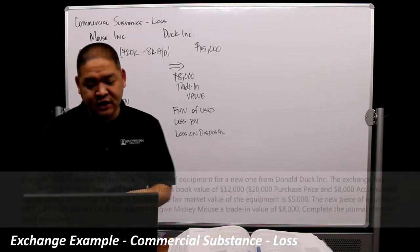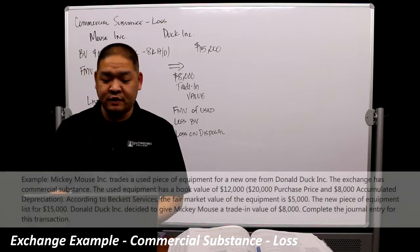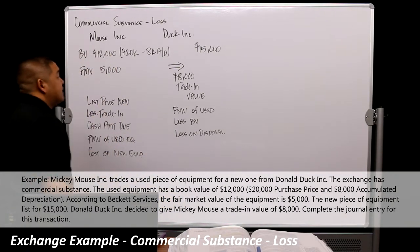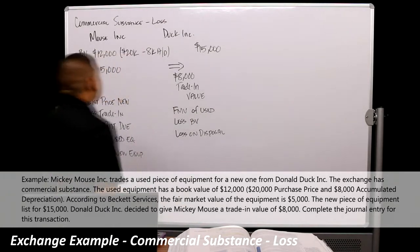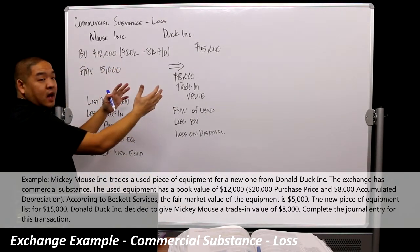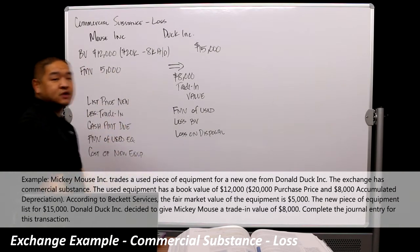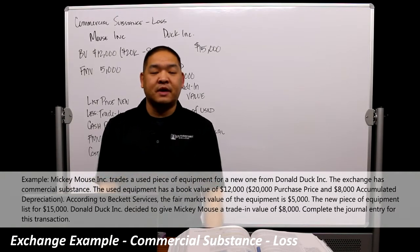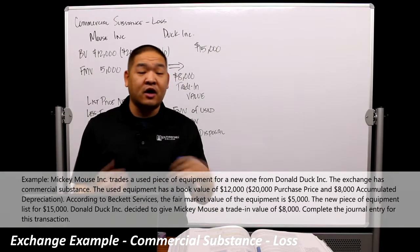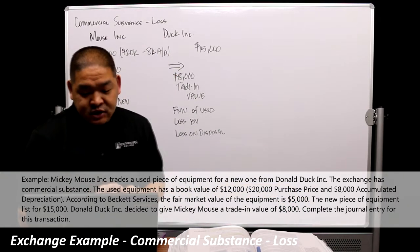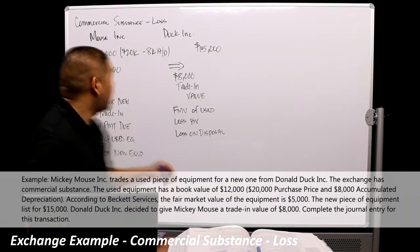Mickey Mouse Inc. trades a used piece of equipment for a new one from Donald Duck Inc. So Mickey has a piece of equipment, Donald Duck sells that equipment, Mickey Mouse decides to see if he can trade and get something better. So this is exactly kind of like a car dealership. I have a car, I go to the car dealership, and I say give me a trade in value for my car, and then I'll buy a new car from you.